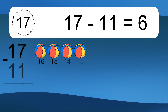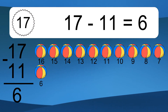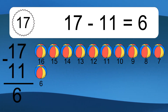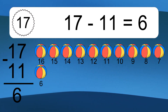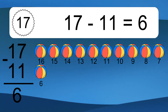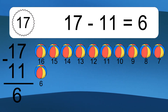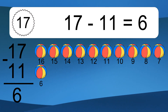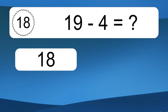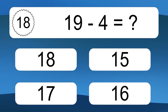17 minus 11 equals 6. Let's count it: 16, 15, 14, 13, 12, 11, 10, 9, 8, 7, 6. 19 minus 4 equals what?